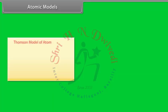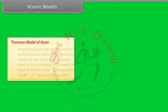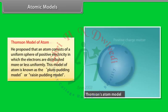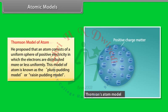Atomic models: Thomson model of atom. He proposed that an atom consists of a uniform sphere of positive electricity in which electrons are distributed more or less uniformly. This model of atom is known as the plum pudding model or raisin pudding model.